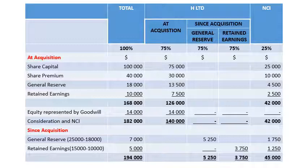The general reserve increased from $18,000 to $25,000. Since the $18,000 is already accounted for at acquisition, we only take the increase of $7,000 under since-acquisition reserves — H Limited's 75% share is $5,250 and NCI is $1,750. Retained earnings increased from $10,000 to $15,000, a difference of $5,000 — H Limited gets $3,750 and NCI gets $1,250. The totals: $42,000 plus $1,750 plus $1,250 gives $45,000. The retained earnings since acquisition is $3,750 and general reserve since acquisition is $5,250.